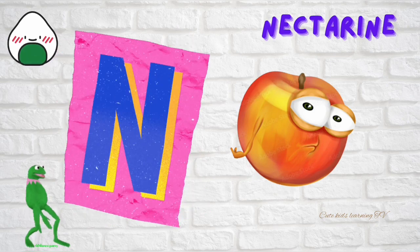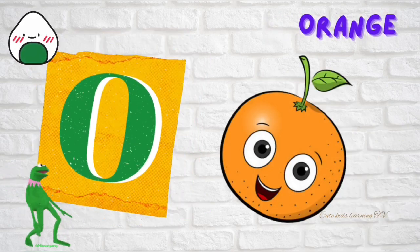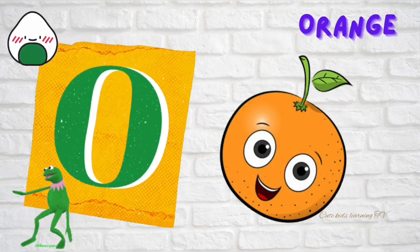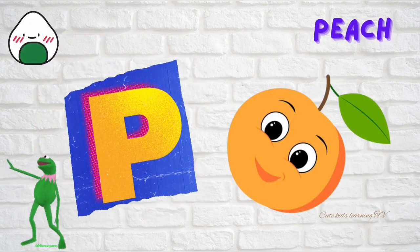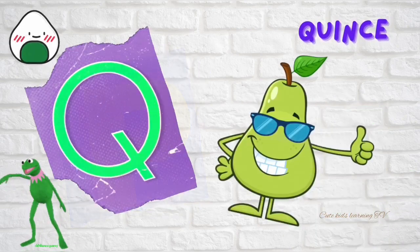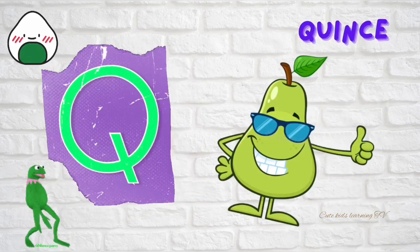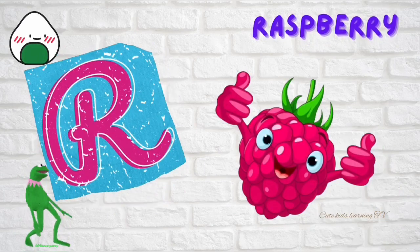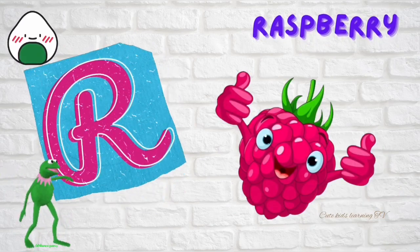N is for nectarine. O is for orange. P is for peach. Q is for quince. R is for raspberry.